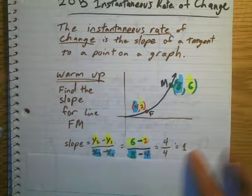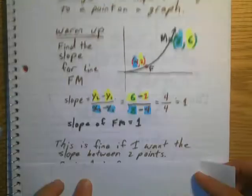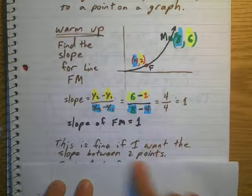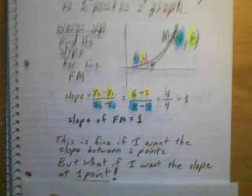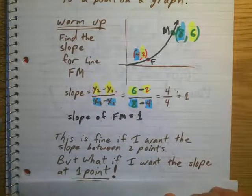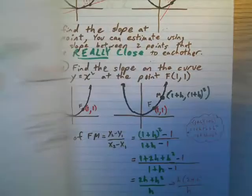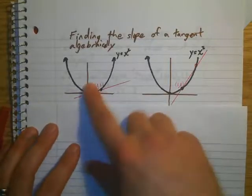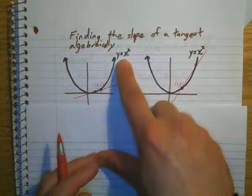Okay, that's all fine if you just want the slope between two points. But what if you want the slope at one point? This could be a problem, because what if I drew — let's say I wanted to find the point at 1, 1 of the graph y equals x squared.